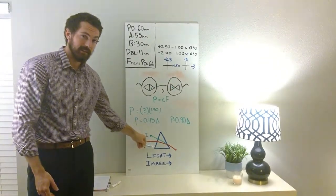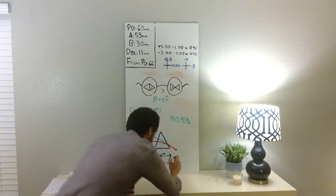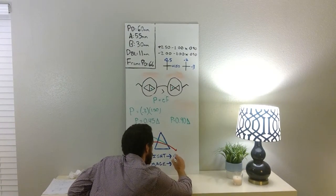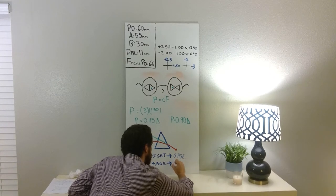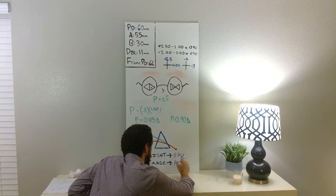Two big parts of the prism: apex and the base. So light's going to come in and be bent towards which part of the prism? The base, very good. And the image is shifted where? To the apex, awesome.